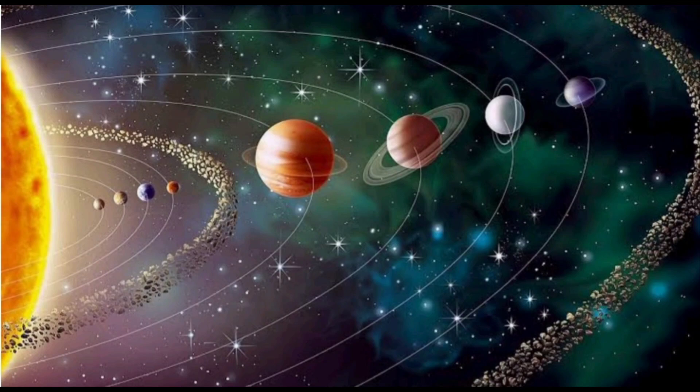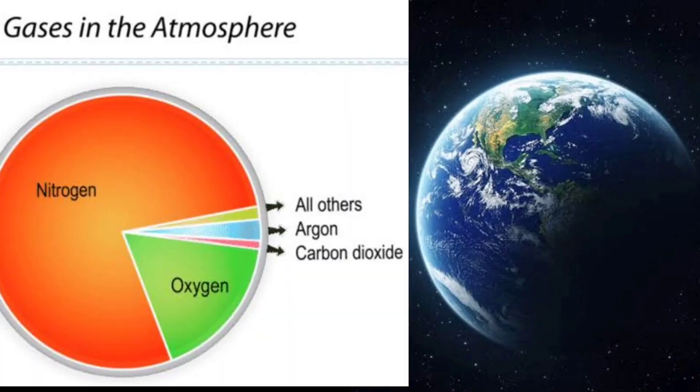Earth is the fifth largest planet in our solar system. The atmosphere is made of gases. The gases are nitrogen, oxygen, argon, and carbon dioxide.